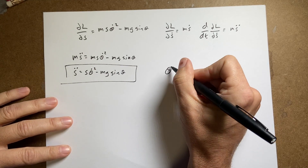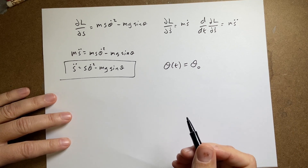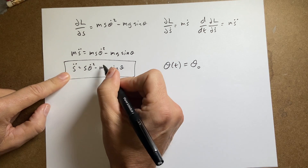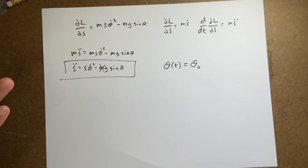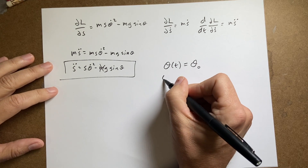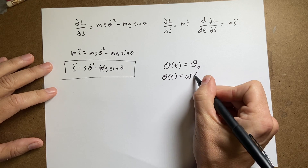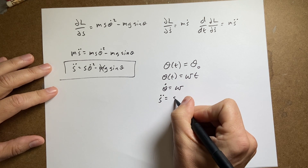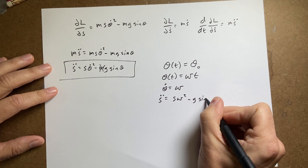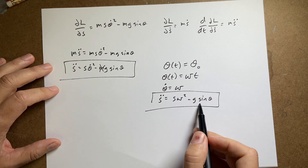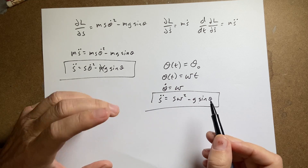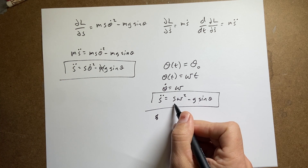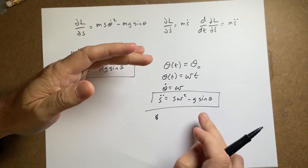Let's check special cases. If theta is constant, then θ̇ = 0, so s̈ = −g·sin(θ), which is exactly the acceleration of a block sliding down a fixed inclined plane — that's correct. If θ(t) = ω·t, then θ̇ = ω, so s̈ = s·ω² − g·sin(θ). The equation of motion has two components: the s·ω² term is a centrifugal force pushing the block outward up the plane, and the −g·sin(θ) term pulls it down.